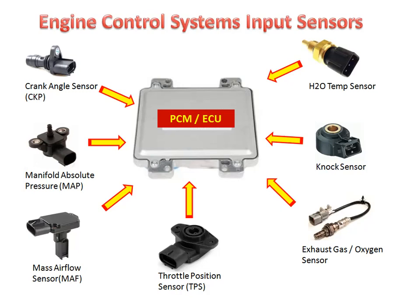The input sensors provide information to the ECU (Electronic Control Unit) in terms of voltage signals for decision making. These include the crank angle sensor (crankshaft position sensor), manifold absolute pressure sensor (MAP), mass airflow sensor (MAF), throttle position sensor (TPS), oxygen sensor — installed in the exhaust manifold or exhaust pipe to monitor oxygen in the exhaust gas — knock sensor (fixed on the engine block), and water or coolant temperature sensor.